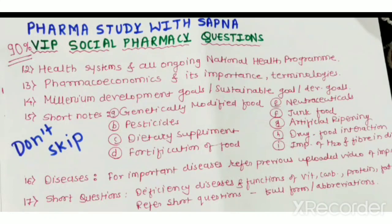Next are questions based on the health system and all ongoing national health programs. You have to enlist different types of national health programs and their details. I have already uploaded a previous video on the health system and ongoing national health programs — please refer to that video. Next is pharmacoeconomics, which is also very important and may be asked as a long or short question.